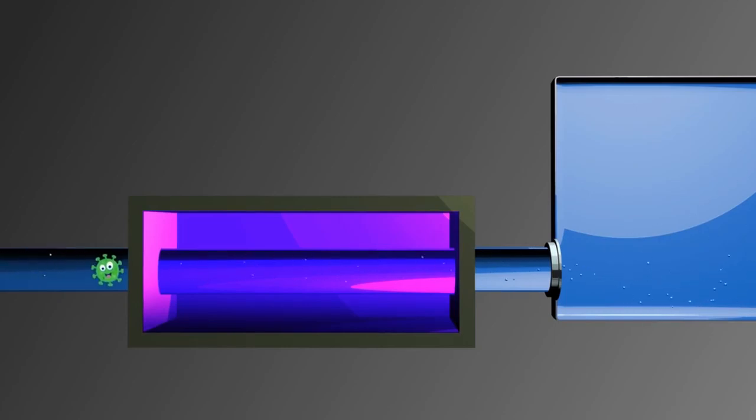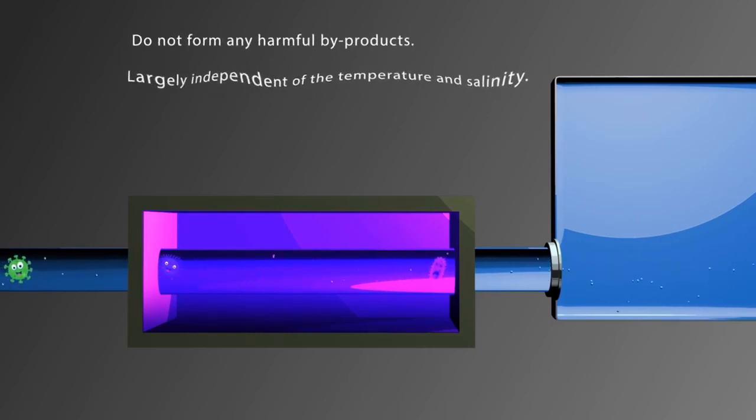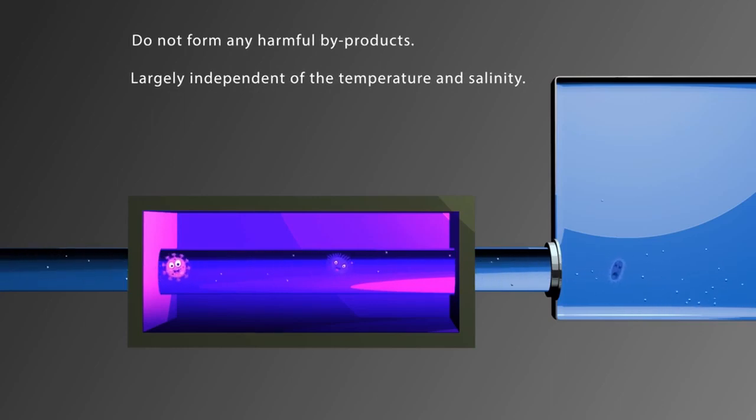UV systems do not form any harmful byproducts and the process itself is largely independent of the temperature and salinity, although UV transmittance is not. The process may have relatively high energy demand in such cases.